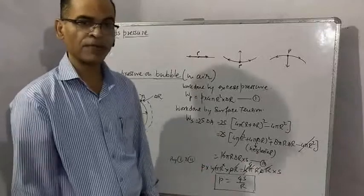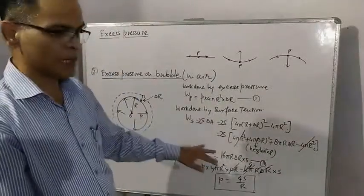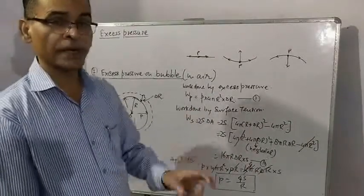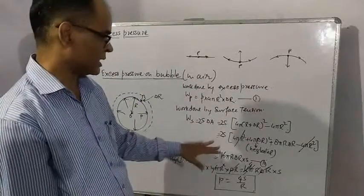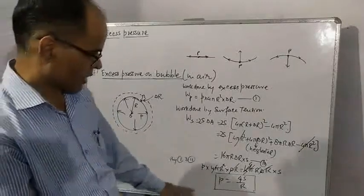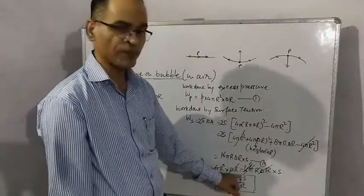If you are calculating for a drop, you will write S ΔA as in part one. And if you are calculating for bubble in air, you will write 2S ΔA. Rest of the things are exactly same. Only in place of 2S by r you will get 4S by r.